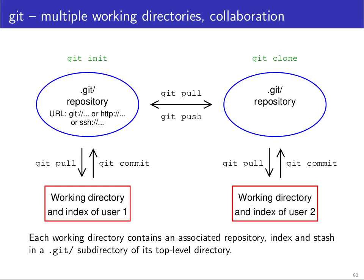We've used git so far as a single user with a single working directory, which is useful for having backup copies of previous snapshots in your own projects. But if you want to use git in a team, then everyone will have their own working directory and their own repository. These repositories need to be linked with each other, and we need operations to move new commits from one repository to another so everyone can eventually have the same view of the project.